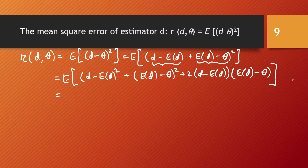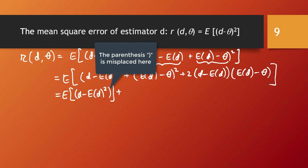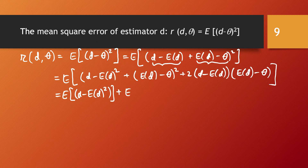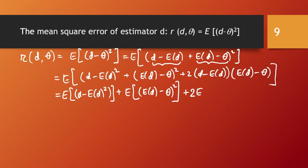Distributing the expected value over the three terms, we get: the expected value of (D minus E[D]) squared, plus the expected value of (E[D] minus theta) squared, plus two times the expected value of their product.